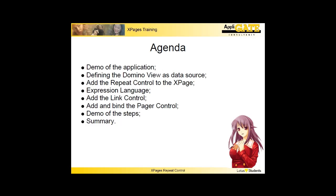The subjects of this instruction: I first show you the application where the XPage is used. It is a composite application that can be used in the Lotus Notes client. The purpose is to find detailed information about a book. After the demonstration, I define a Domino view as the data source for the XPage. The XPages repeat control uses collections as a source, which could be the result of a DB column function or, as in our case, a Domino view.